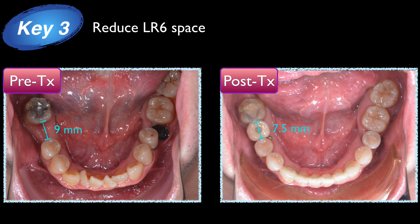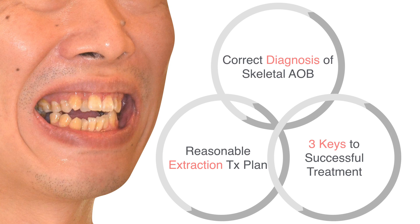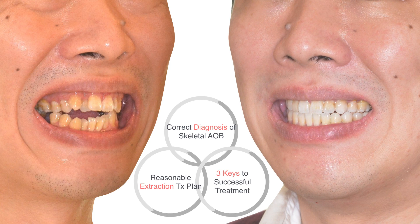Key number three: we reduced the lower right first molar space from 9mm to 7.5mm for two reasons. One is to use the space to relieve anterior crowding. The other is to shorten the mesial-distal dimension to simplify the implant procedure and shorten the overall treatment time.